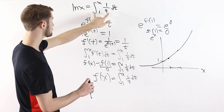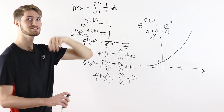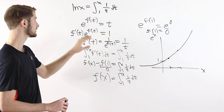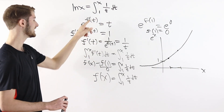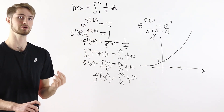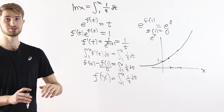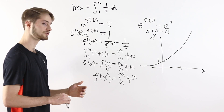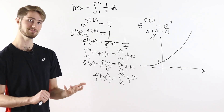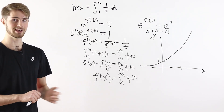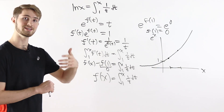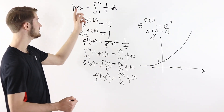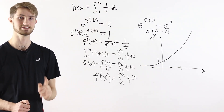Now if you want to start with this integral and prove that it's an inverse to e to the x, you're going to need a little bit more work to prove that in a rigorous way. If you're interested, I've left some more details in the description. But this shows us that there are two equivalent definitions for natural log of x: one is that it's the inverse to e to the x, and the other is that it's the integral from 1 to x of 1 over t dt.